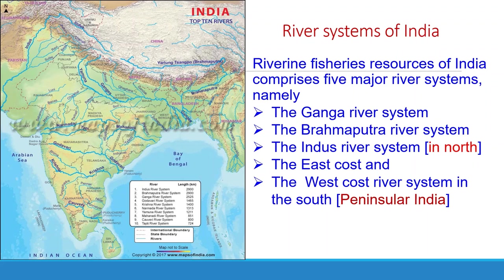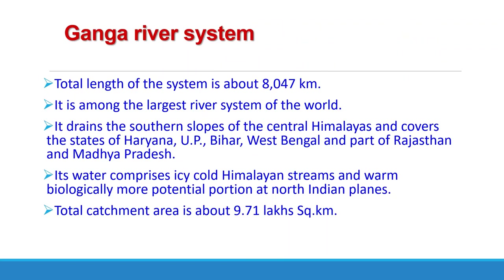India is quite rich in inland water resources, with a vast network of rivers, canals, lakes, and ponds. On the basis of geographical conditions and fish species, the riverine system of India is divided into five major river systems: the Ganga, the Brahmaputra, the Indus, the East Coast, and the West Coast river systems. Besides major rivers, there are extensive irrigation canals, lakes, ponds, and reservoirs, all of which are rich sources of fishes — all these water bodies harbor about 994 fish species of about 345 genera.